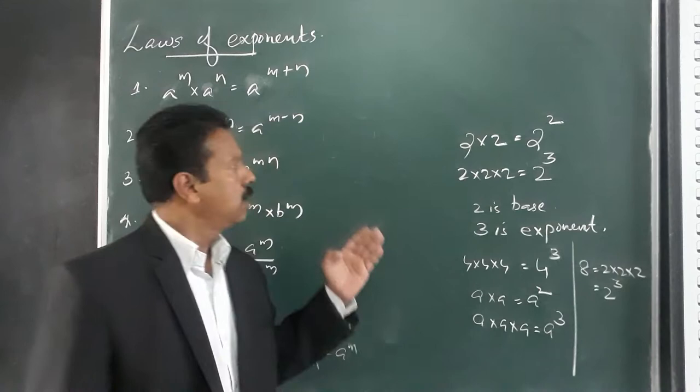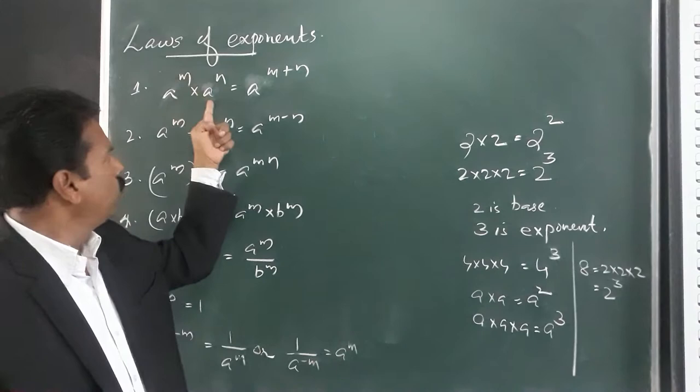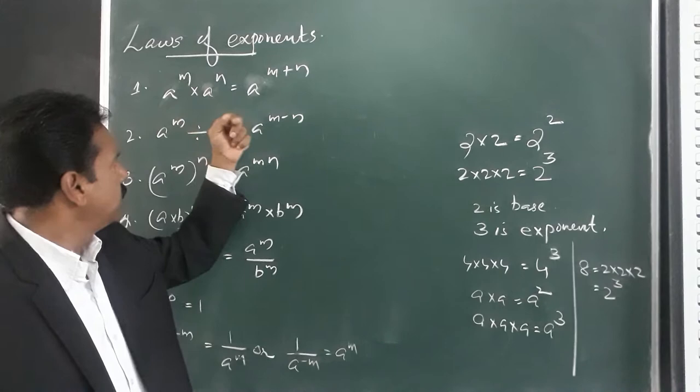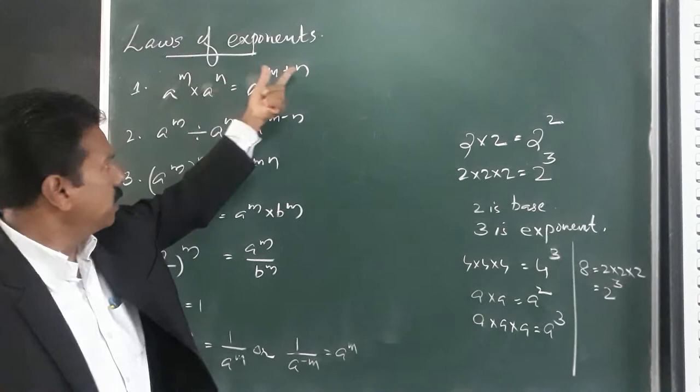The first rule: a raised to the power of m, into a raised to the power of n — both bases are the same but exponents are different — equals a raised to the power of m plus n. We add the exponents.